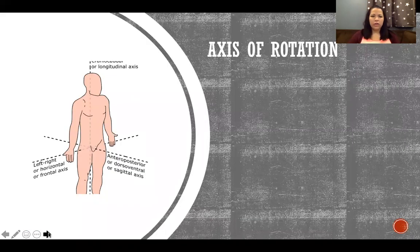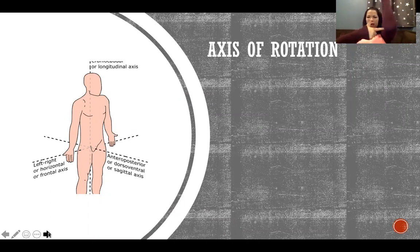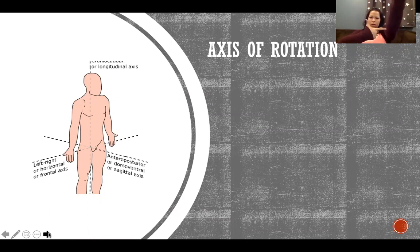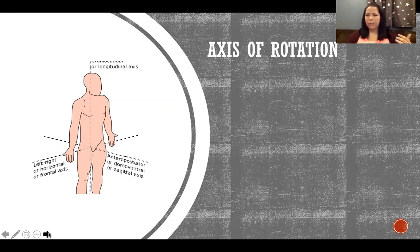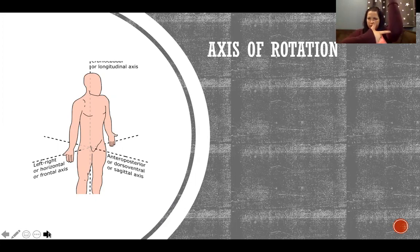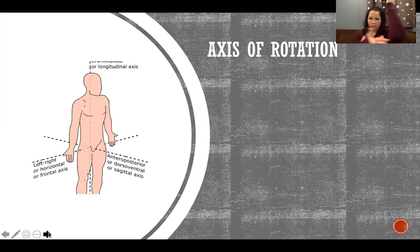Now, axes of rotation. When we move along a plane, our limbs rotate around an axis. For example, when I extend and flex my elbow, that's happening in the sagittal plane and I'm rotating around this axis. Think of it like a hinge — where the peg of the hinge goes through is the axis of rotation. My finger pointing to my elbow represents that axis.